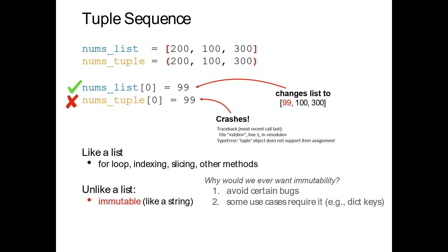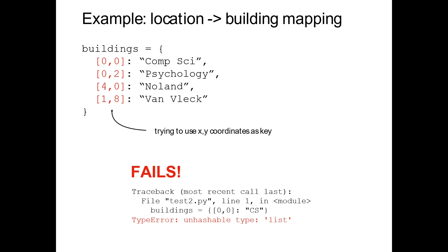Why would we ever want that? First, it helps avoid certain kinds of bugs. Some data we don't want to change — think back to the hurricanes dataset. We don't want to accidentally change the year a hurricane took place, or the number of deaths — that's historical data. By choosing a data structure that doesn't allow changes, it'll crash if we accidentally change something, so we'll know right away there's a problem and can fix it. Crashing is always better than just getting the wrong answer.